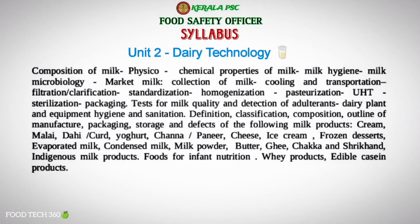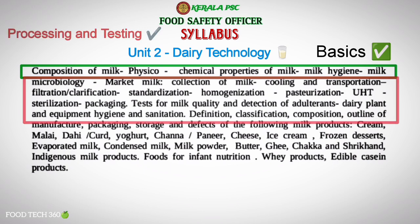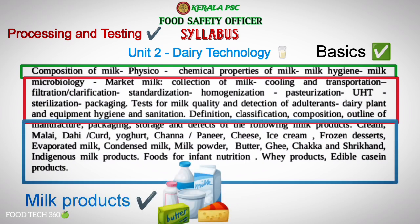Unit 2, Dairy Technology, covers the following topics: composition of milk, physicochemical properties of milk, milk hygiene, milk microbiology and dairy technology. The next subtopic is market milk, which includes milk processing and packaging. The remaining topics are milk products related topics.